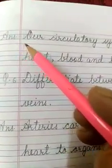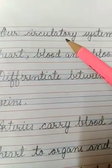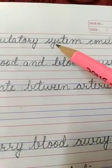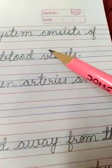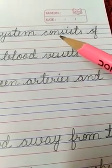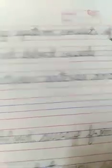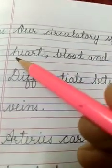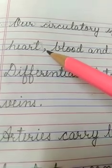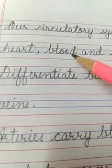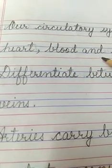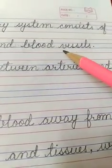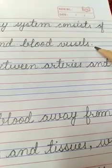Now, come to answer number 5. Our circulatory system, S-Y-S-T-E-M, system consists of, C-O-N-S-I-S-T-S, consists of heart, H-E-A-R-T, heart, comma, blood, B-L-O-O-D, and blood vessels, V-E-S-S-E-L-S, full stop.